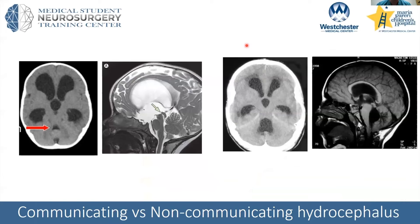With that knowledge, we can talk more about hydrocephalus. An important concept is communicating versus non-communicating hydrocephalus. Think of a river — if you build a dam, fluid builds up upstream. Similarly, if the aqueduct is very narrow, you'll see a buildup of fluid upstream with enlargement of the lateral and third ventricles, while the fourth ventricle remains small. This is called obstructive or non-communicating hydrocephalus, meaning the ventricles are not all in direct communication with each other.